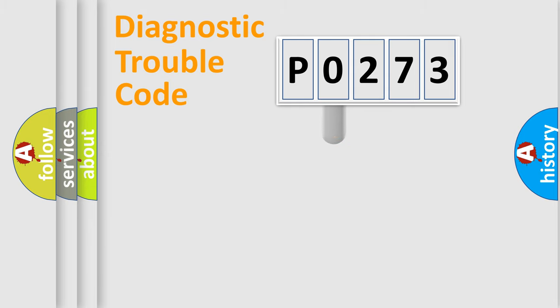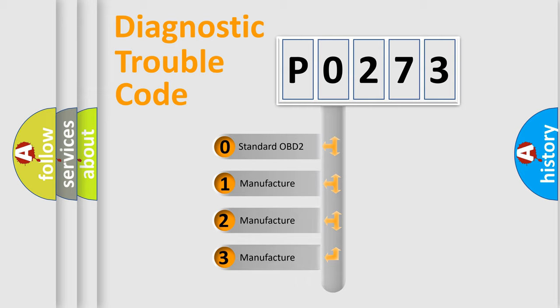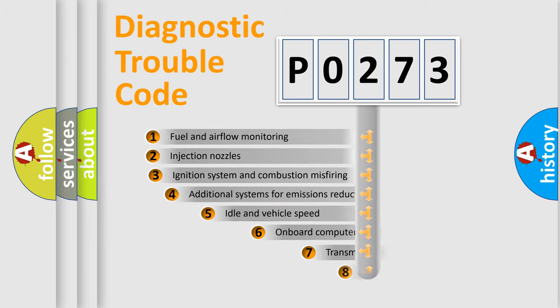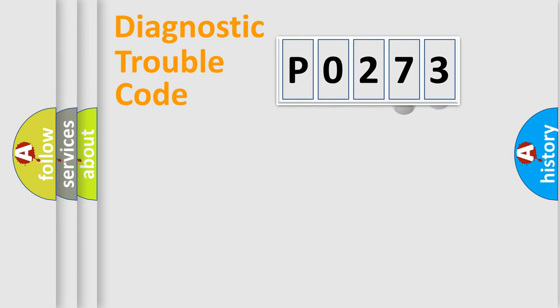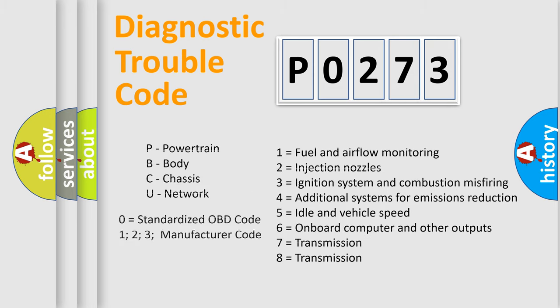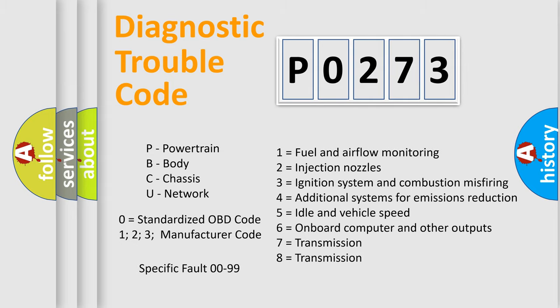This distribution is defined in the first character of the code. If the second character is expressed as 0, it is a standardized error. In the case of numbers 1, 2, or 3, it is a more specific expression of a car-specific error. The third character specifies a subset of errors. The distribution shown is valid only for the standardized DTC code. Only the last two characters define the specific fault of the group, and this division is valid only when the second character is expressed by the number 0.